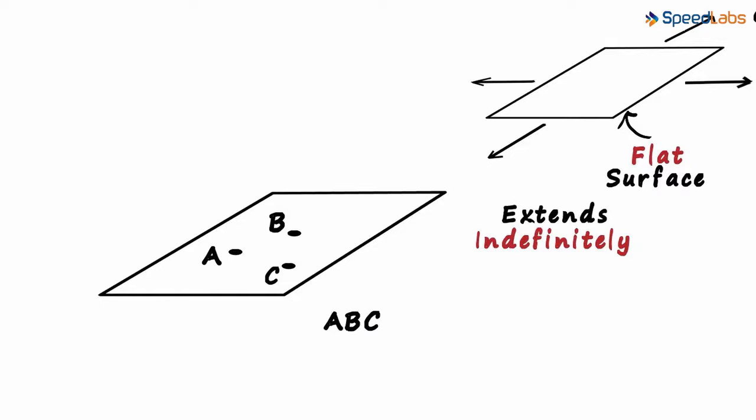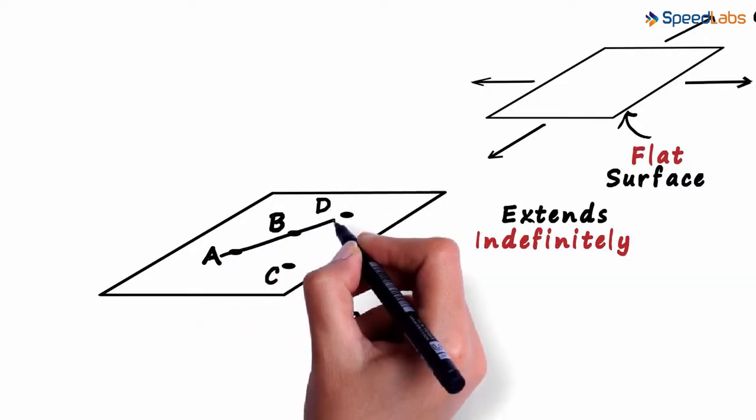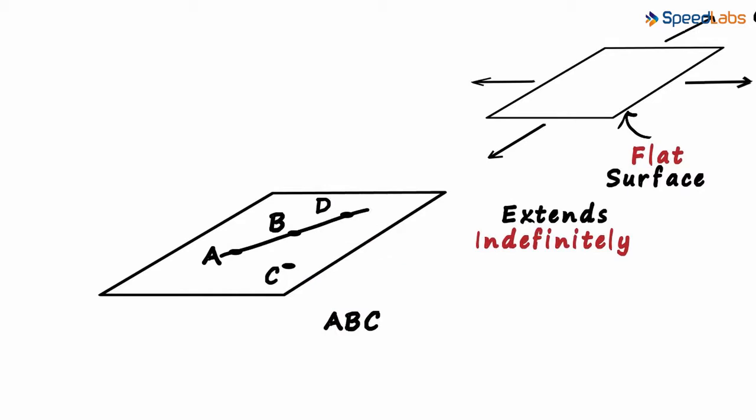But there is a catch. The three points we use to name the plane should not form a straight line. If we have a point D on the plane such that A, B and D form a straight line, then this plane cannot be called ABD.